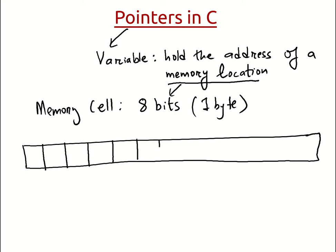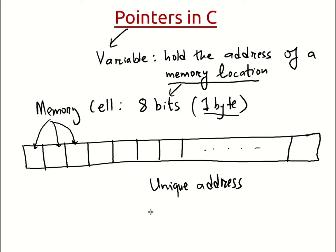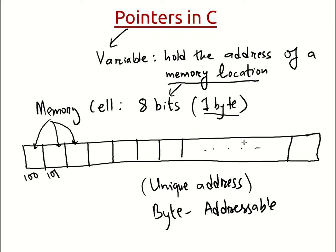So a computer's memory is composed of a collection of memory cells. Each box here represents a memory cell, and there are many memory cells inside a computer's memory. Each memory cell is 1 byte. In a modern-day computer, each memory cell has a unique address — this is called byte-addressable. All modern-day computers are byte-addressable. For example, if the starting address of one memory cell is 100, the next one is 101, then 102, 103, 104, 105, 106, and so on.